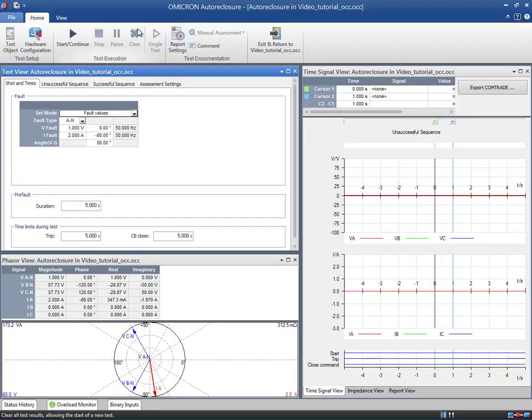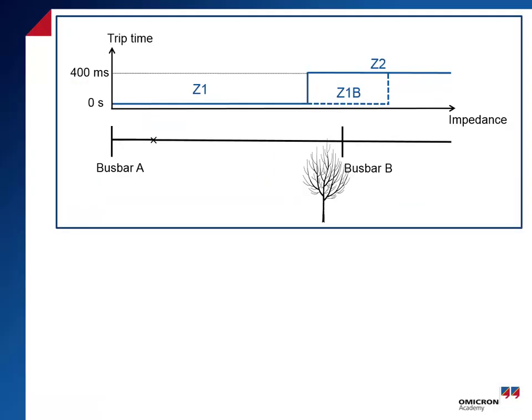In this example, we will test an automatic reclosing with only one reclosure cycle, but remember that you can test up to 15 cycles in the test module. According to the relay under test, the extended zone Z1B is enabled before the first auto reclosure. This means that the relay trips instantaneously for faults up to 120% of the line impedance.